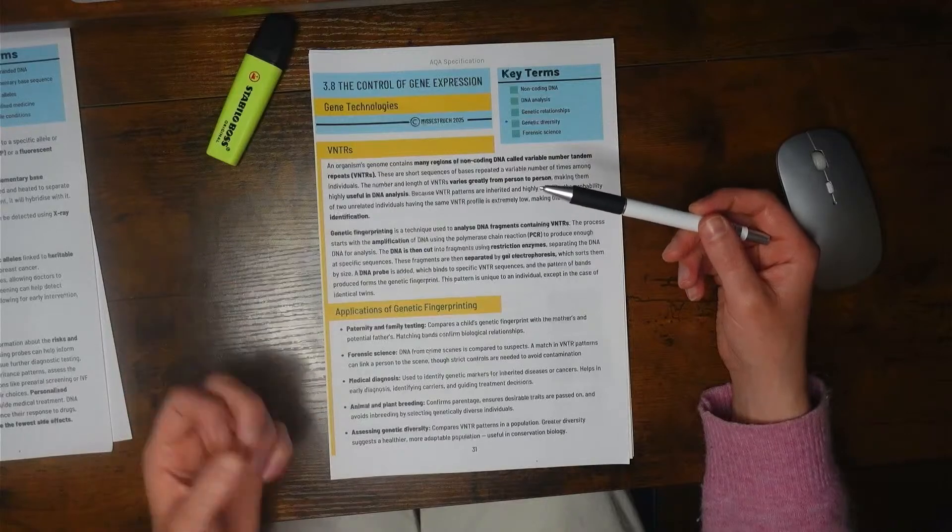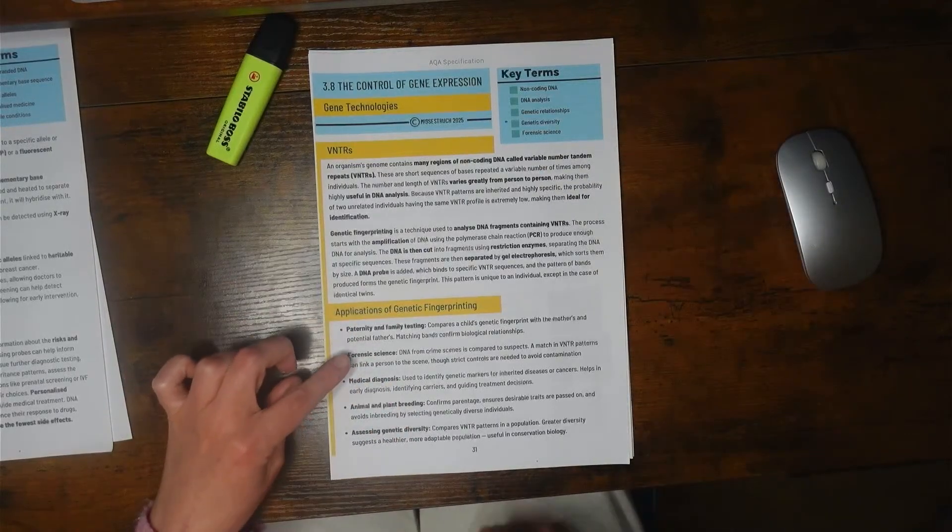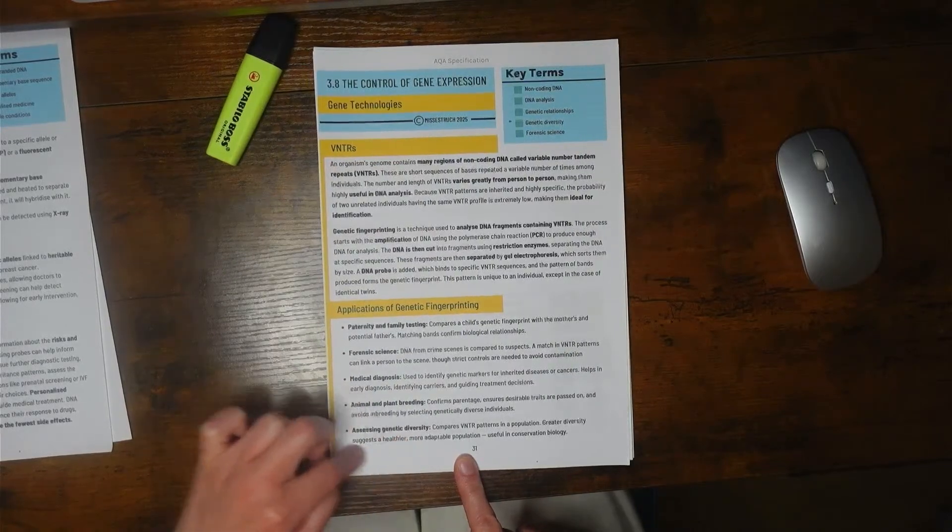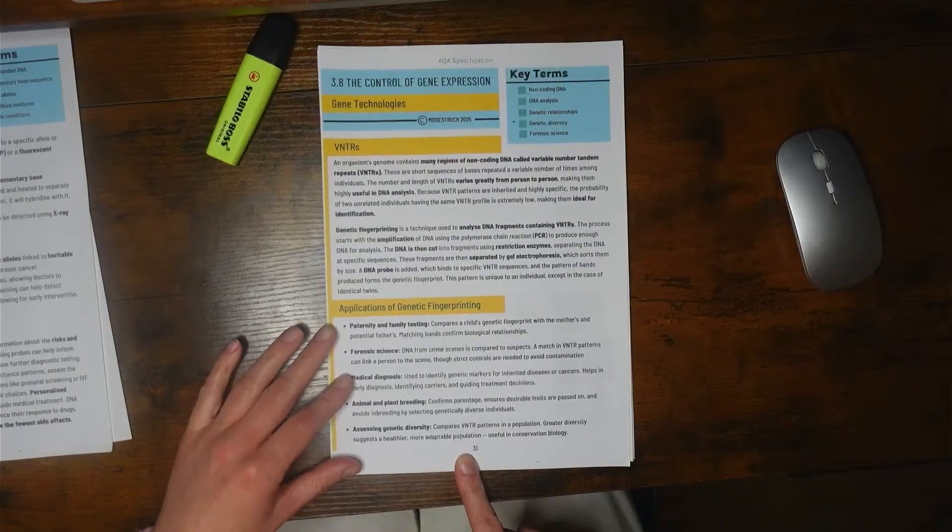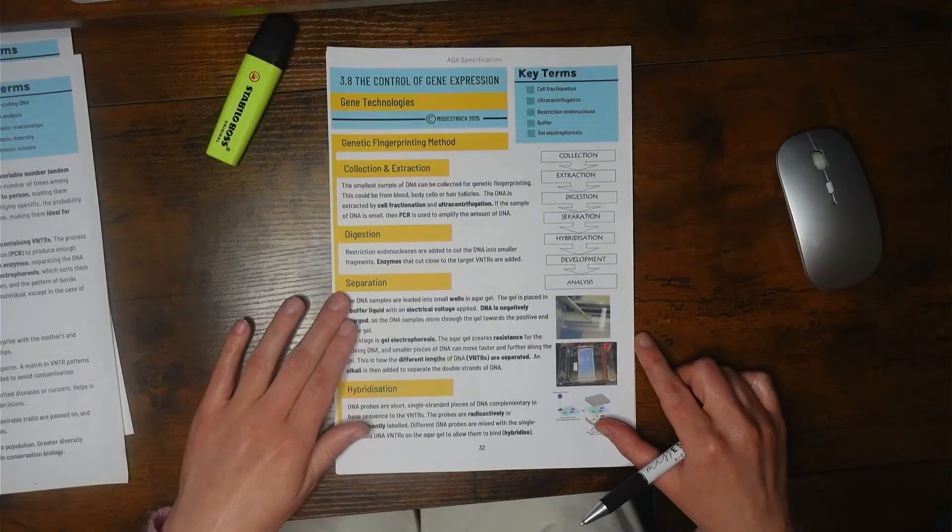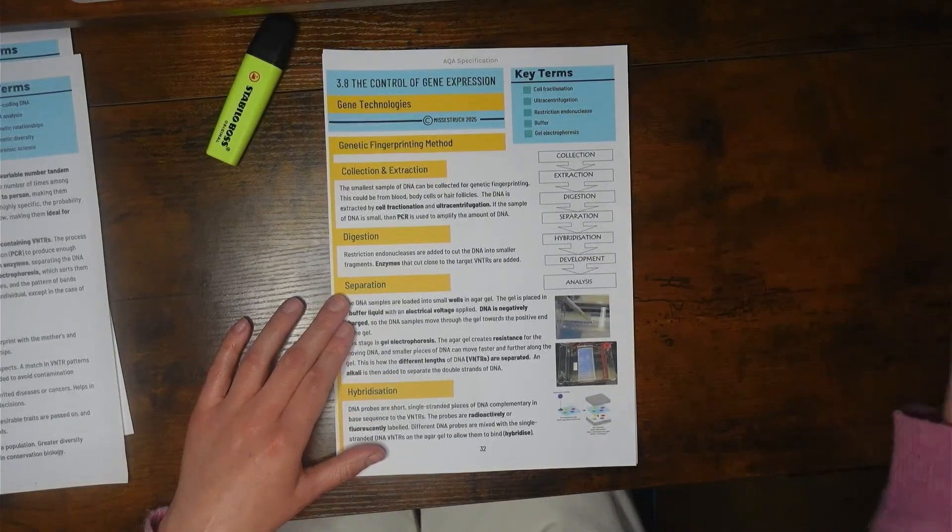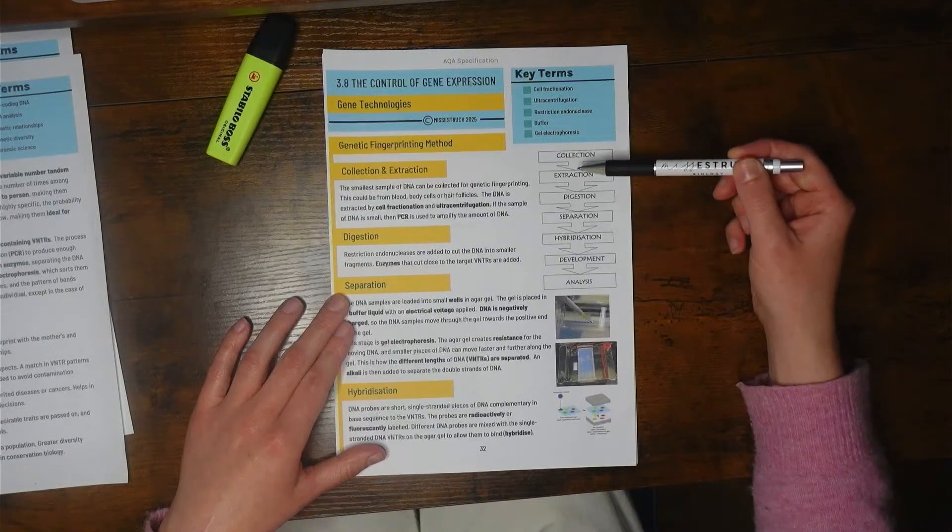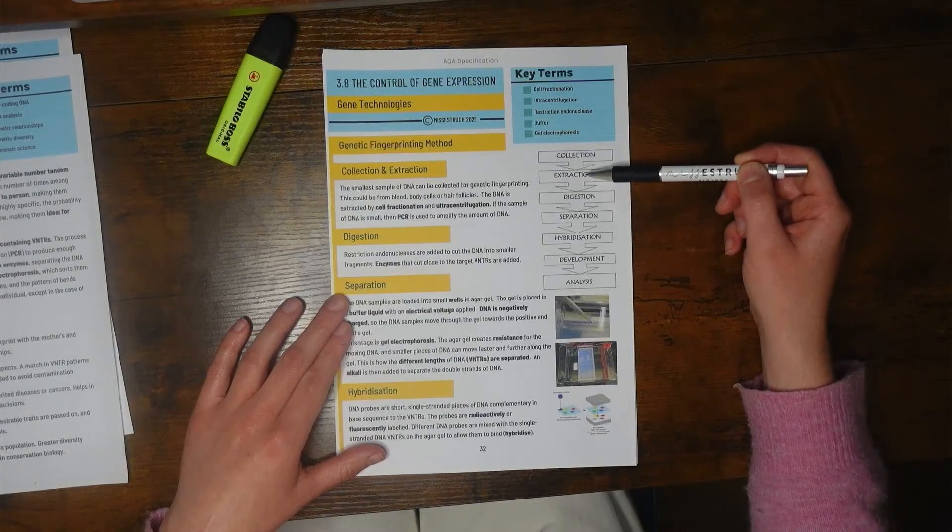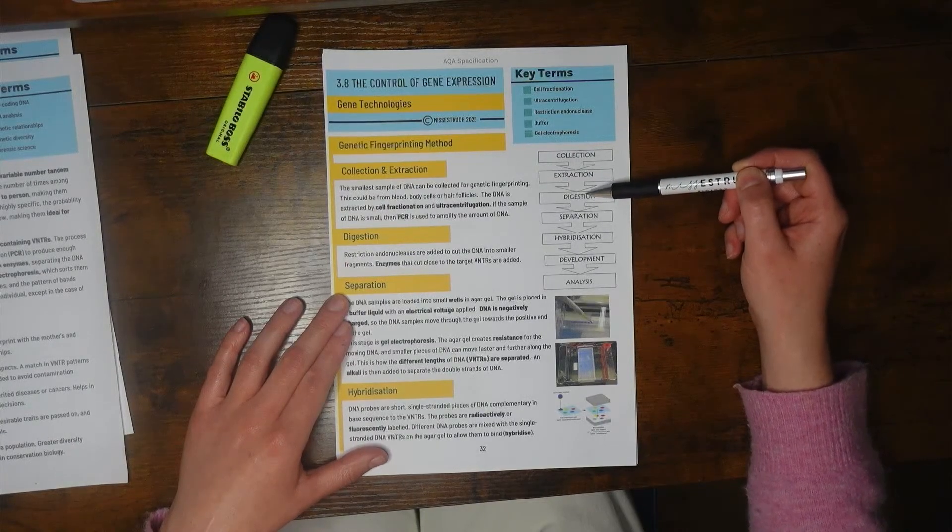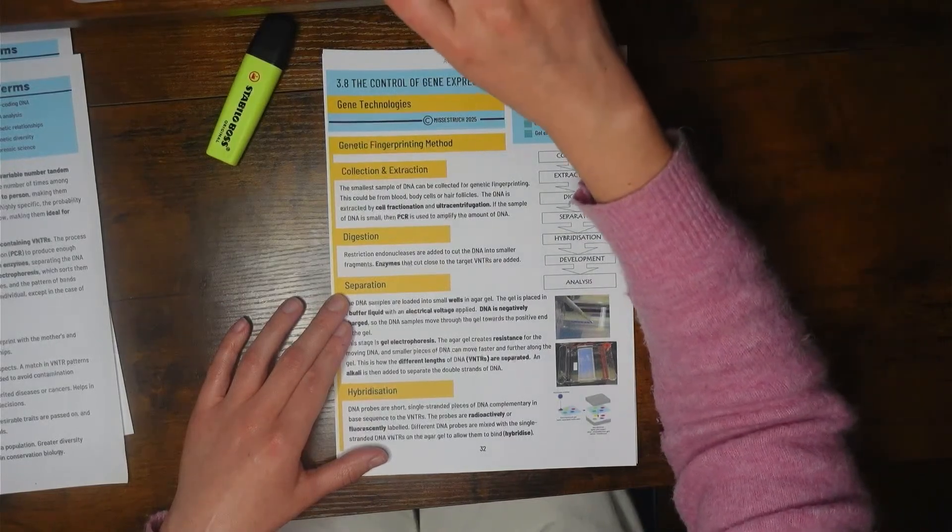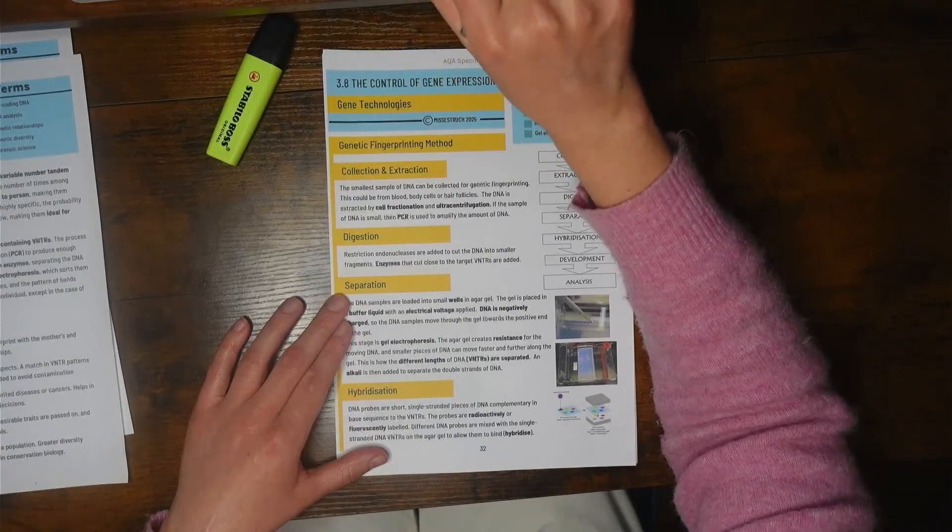We can use these VNTRs as a way to identify genetic patterns, for paternity testing, forensic science, medical diagnosis, animal and plant breeding, and looking at genetic diversity. The process of genetic fingerprinting is split into these stages: collection, extraction, digestion, separation, hybridization, development, and analysis.